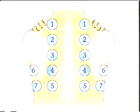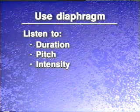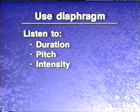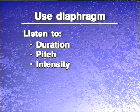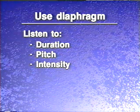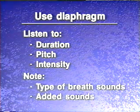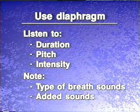To auscultate the posterior thorax, begin at the apices and proceed downward, moving systematically from side to side and comparing the sounds in symmetrical areas. Using the diaphragm of the stethoscope, listen to at least one entire breathing cycle at each location. Listen to the duration, pitch, and intensity of the inspiratory and expiratory sounds, decide what type of breath sounds you're hearing, and note any added sounds.